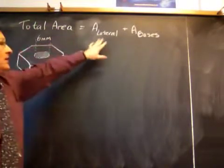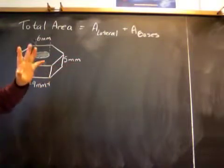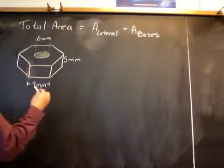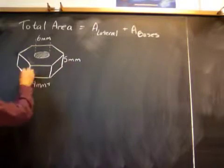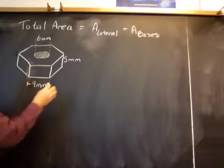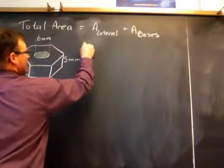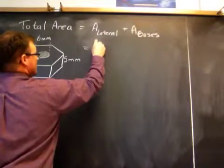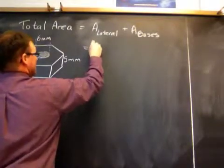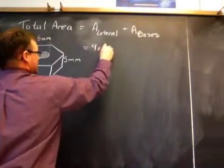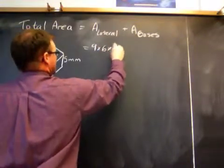Total area is going to be the lateral area plus the area of the bases. There are two of them. So the lateral area is going to be perimeter of the base times the height. Perimeter of the base is going to be 9 times 6, and the height is 5.